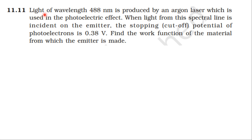From NCERT textbook, dual nature of radiation and matter topic, question 11. Light of wavelength 488 nanometers is produced by an argon laser which is used in the photoelectric effect. When light from this spectral line is incident on the emitter, the stopping potential of photoelectrons is 0.38 volts. Find the work function of the material from which the emitter is made.